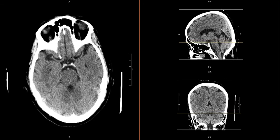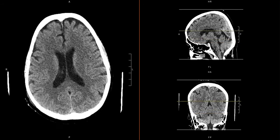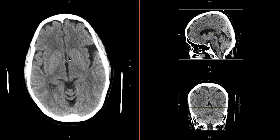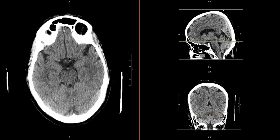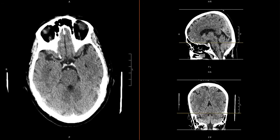Once we get here, the internal carotids will branch into the MCA — the first portion of the MCA goes along the sylvian fissure, which is what we see here. The suprasellar cistern gives off the sylvian fissures, and you can follow these M1 segments throughout the sylvian fissure bilaterally. We can do it on the other side as well — here we can see the M1 branch going through the sylvian fissure.